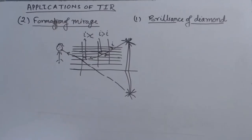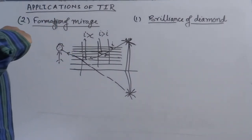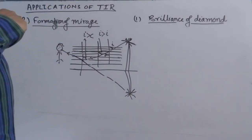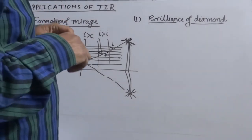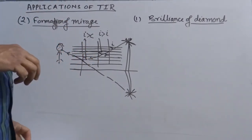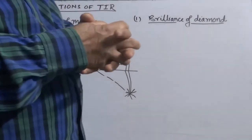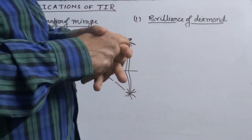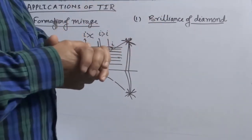Now let us talk about the applications of total internal reflection. The first application is the brilliance of diamond. You must have heard about diamond; many of you might have seen one as well.